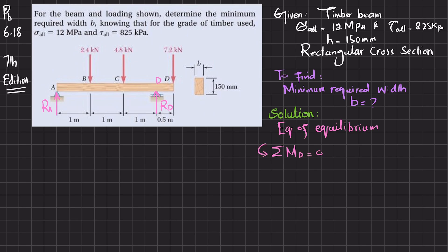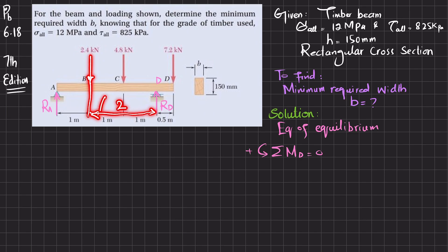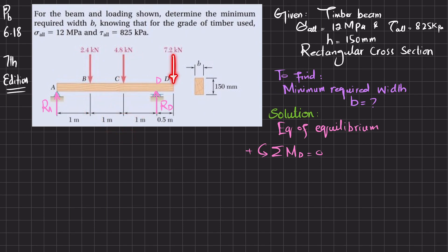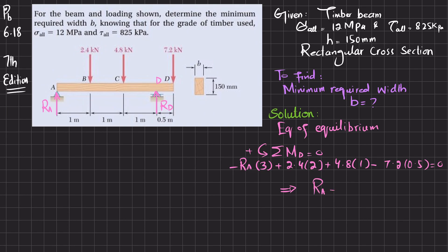Taking moments about point D and taking counterclockwise as positive: the moment due to Ra has a perpendicular distance of 3 (clockwise, so negative); 2.4 kN has a perpendicular distance of 2 (counterclockwise, positive); 4.8 kN has a perpendicular distance of 1 (counterclockwise, positive); and 7.2 kN has a perpendicular distance of 0.5 (clockwise, negative). Solving this gives Ra = 2 kN.